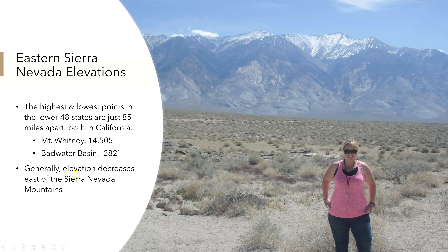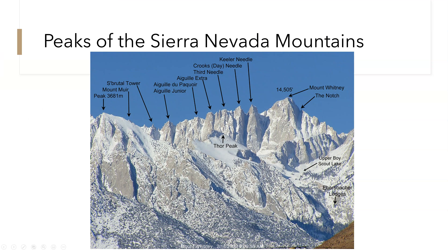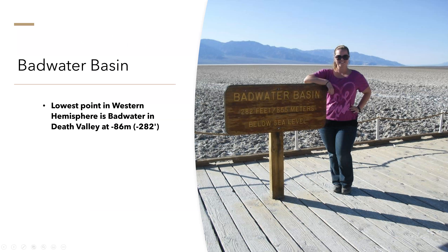The highest and lowest points in the lower 48 states are just 85 miles apart, both in California. Mount Whitney has an elevation of 14,505 feet, and in Death Valley we see Badwater Basin at negative 282 feet of elevation. Elevation generally decreases east of the Sierra Nevada. Mount Whitney is the tallest point in the lower 48 states, and it's in California. Badwater Basin is the lowest point in the western hemisphere, also in California.